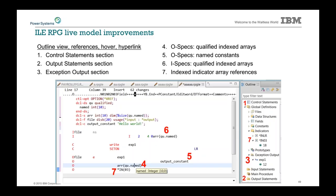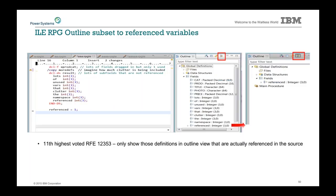Live outline model improvements: a number of things were added, including O-specs. With the RPG outline, you can now subset to reference variables — you can go to your outline view and change the view to subset things to get just the variables referenced in a particular area. This was a very highly voted RFE that we were able to get delivered in this release.